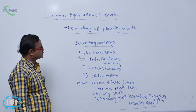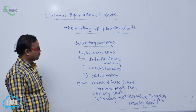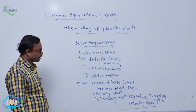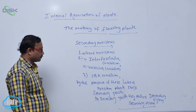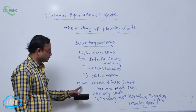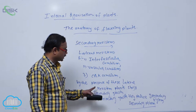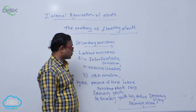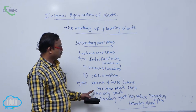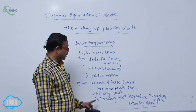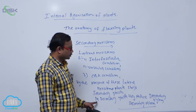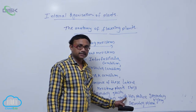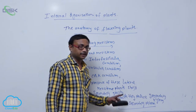They are known as lateral meristems — interfascicular cambium, vascular cambium, cork cambium. By the presence of these lateral meristems, plants show secondary growth. In secondary growth, they produce secondary xylem and secondary phloem.